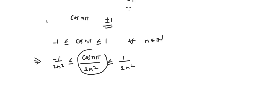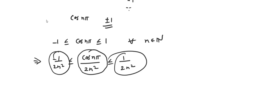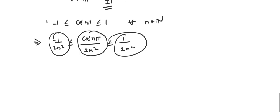This is the setup for the Sandwich Theorem. We identify one bounding sequence as bₙ = −1/(2n²), another as cₙ = 1/(2n²), and our original sequence aₙ = cos(nπ)/(2n²) lies between them.